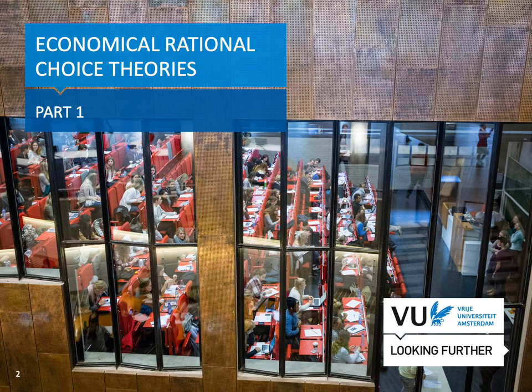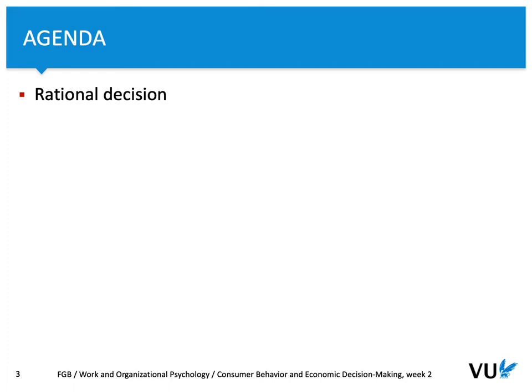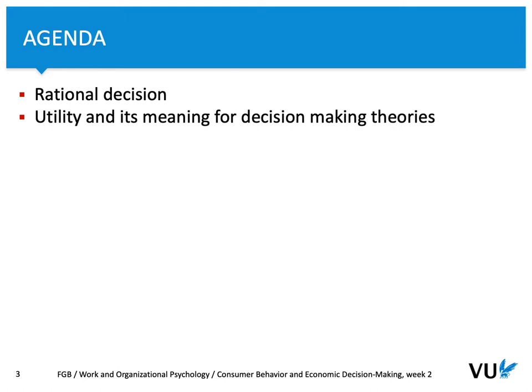In part 1, we are going to explore a definition of rational decision making — that will be the first part of the agenda. In the second part of this week, we are going to focus on utility and its meaningful decision making theories. And finally, we are going to focus on expected utility and risk.